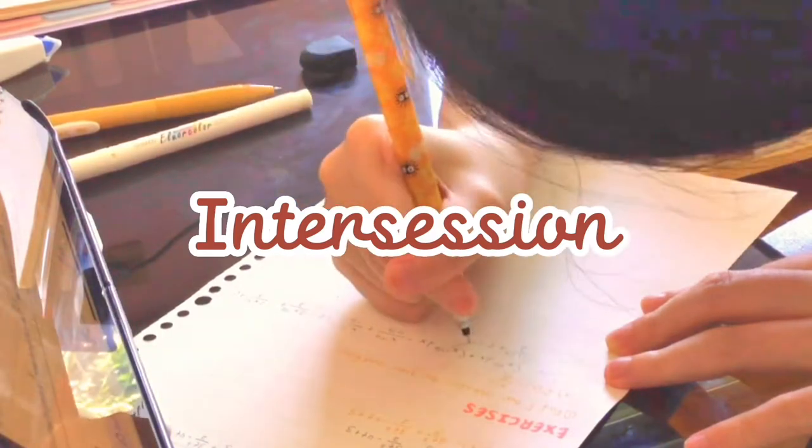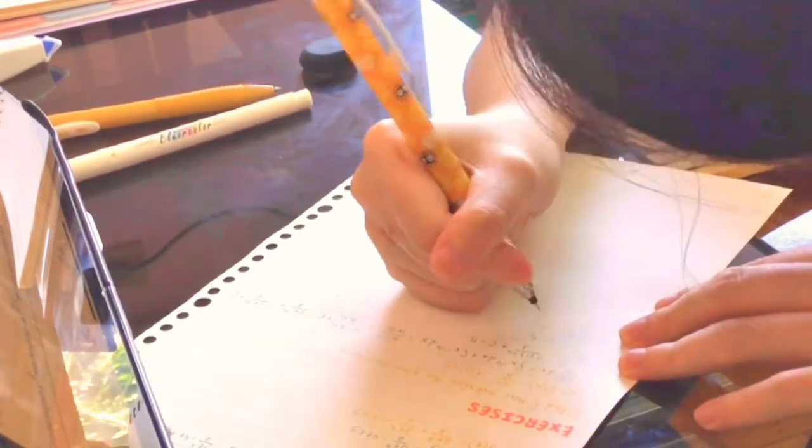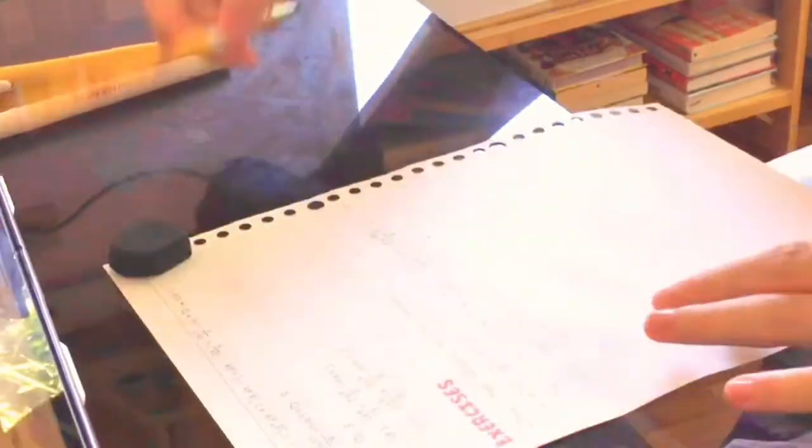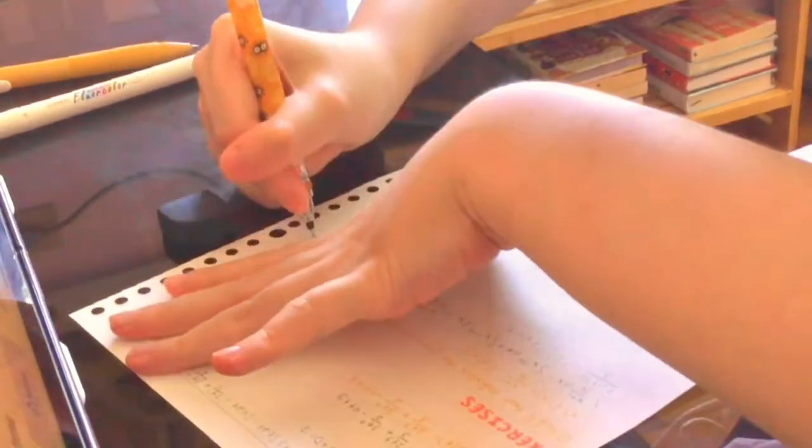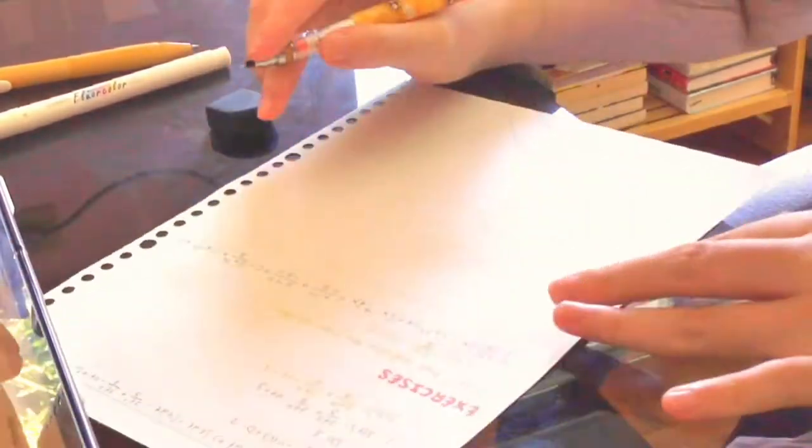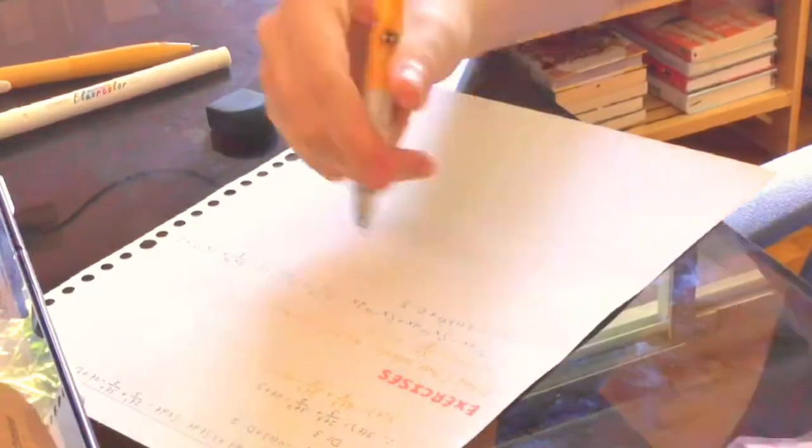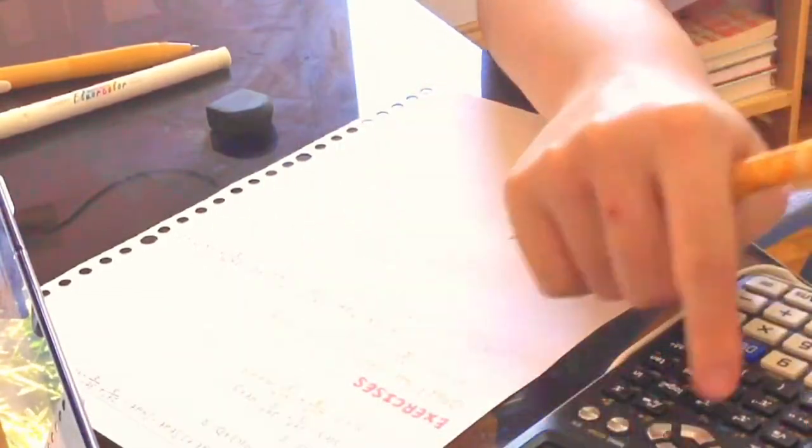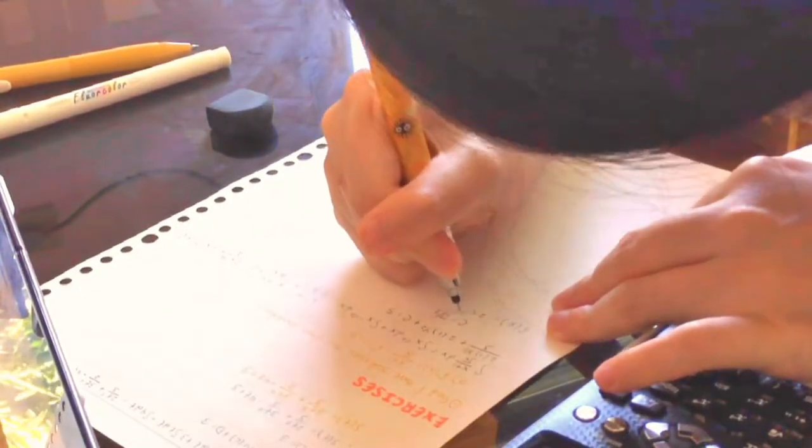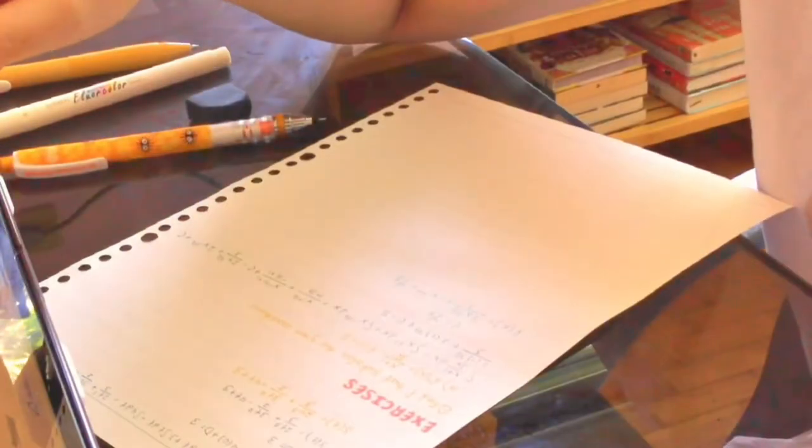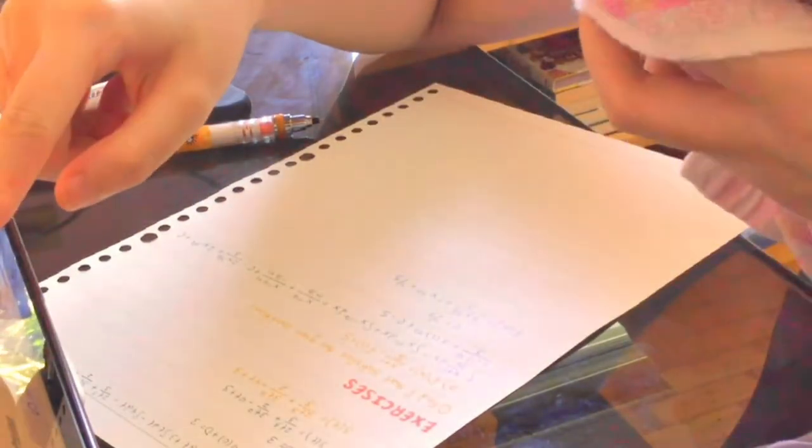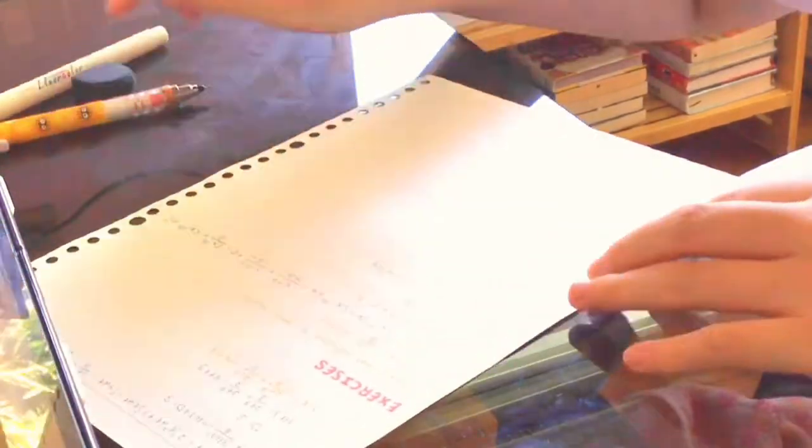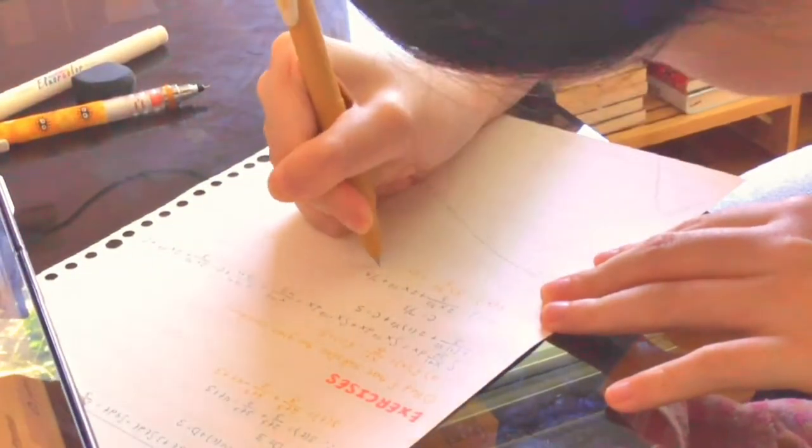Next is intercession. Since Ateneo added a lot of core classes compared to other universities, some students may be taking around 30 or more units, which can be mentally tiring and physically draining. This is why Ateneo has intercession, also known as summer term, which is six weeks long.